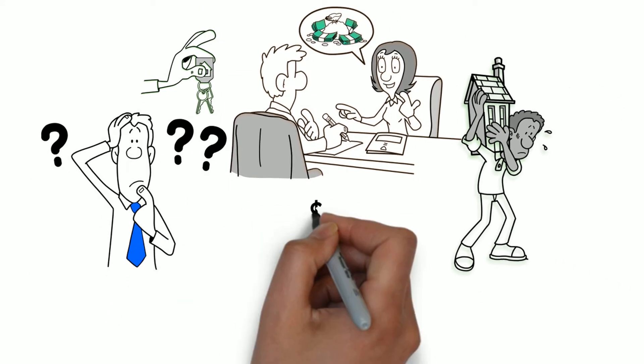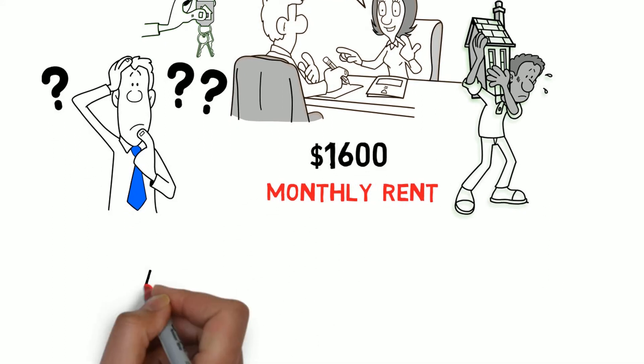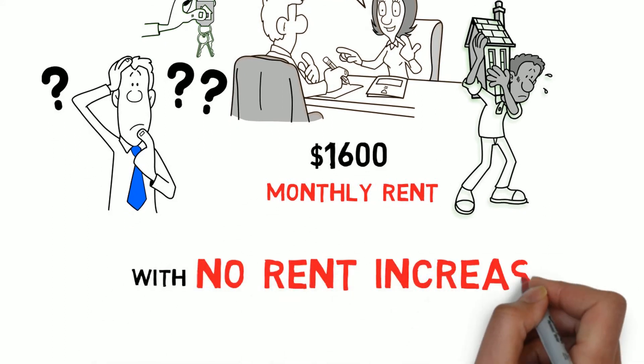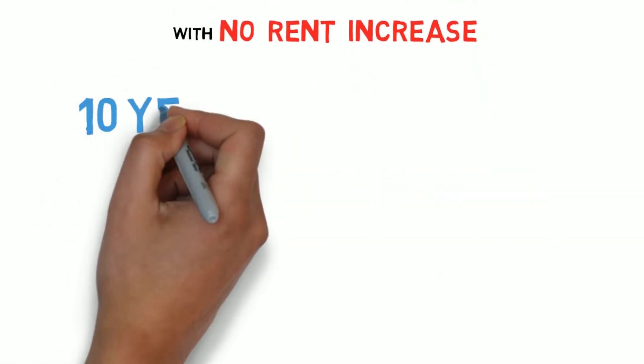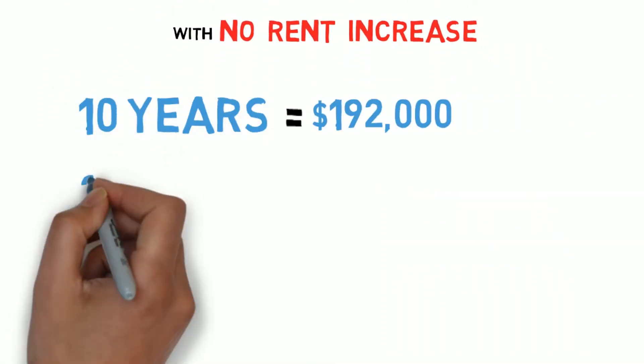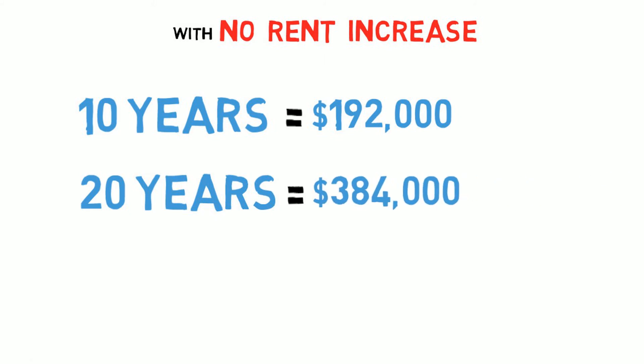Let's see where your money is going. If you are paying $1,600 a month in rent with no rent increase, this is what you will pay. 10 years, $192,000. 20 years, $384,000. 30 years, $576,000.